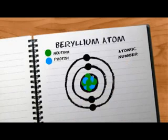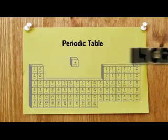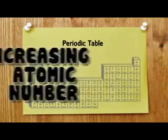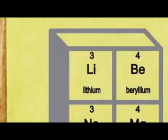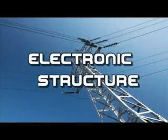Atoms are arranged in the periodic table in order of increasing atomic number. At number one, hydrogen. At two, helium. At three, lithium. At twenty, calcium. At fifty-seven, something else.